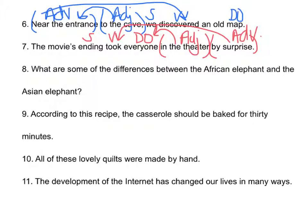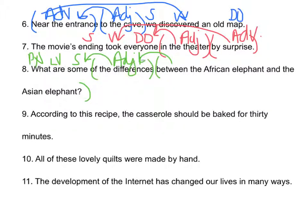'What are some of the differences between the African elephant and the Asian elephant?' 'Of the differences' and 'between the two kinds of elephants' are both phrases. 'Are' is your linking verb; 'some' is the subject. 'Of the differences' modifies 'some,' which is a pronoun: adjective phrase. 'Between the African elephant and the Asian elephant' modifies 'differences,' which is a noun: also an adjective phrase.